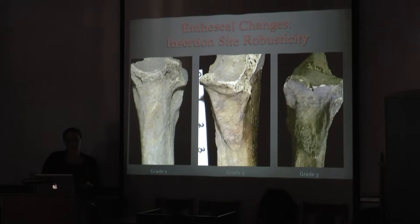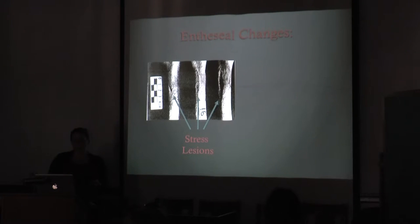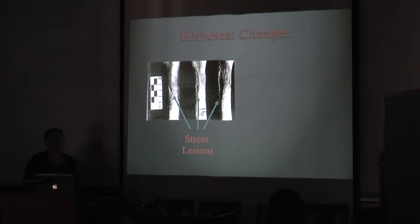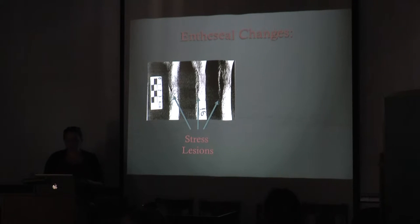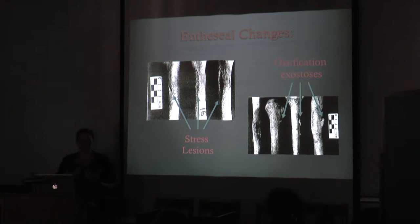Protocols for scoring robusticity of entheseal changes are insertion site-specific and range from 1 (slight) to 3 (severe). For example, these are the three grades of the brachialis insertion. In addition to examining robusticity, I also recorded the degree of stress lesions, which include pitting and furrowing of an attachment area associated with continuous microtrauma. There's also the category of ossification exostoses — bony projections that form when abrupt macrotrauma, such as a muscle rupture, causes new bone formation to be incorporated into tendon or ligament tissue.